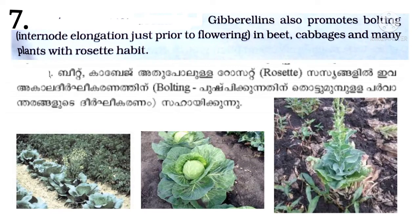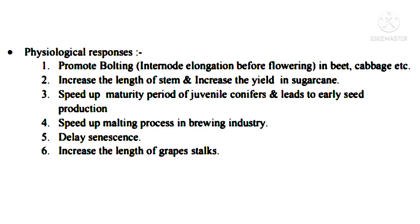7. Gibberellins also promote bolting — that is, internode elongation — just prior to flowering in beet, cabbages, and many plants with rosette habit. In beetroot, cabbage, and other rosette plants, gibberellins promote bolting, which is internode elongation before flowering.